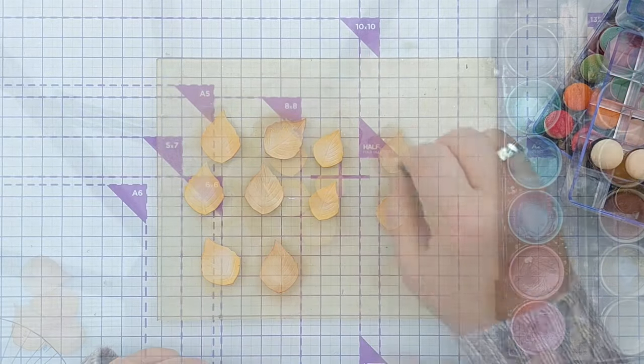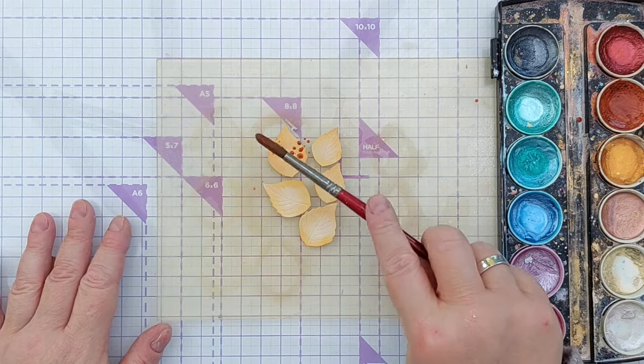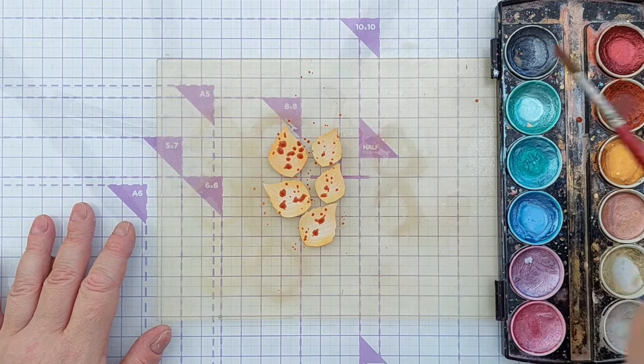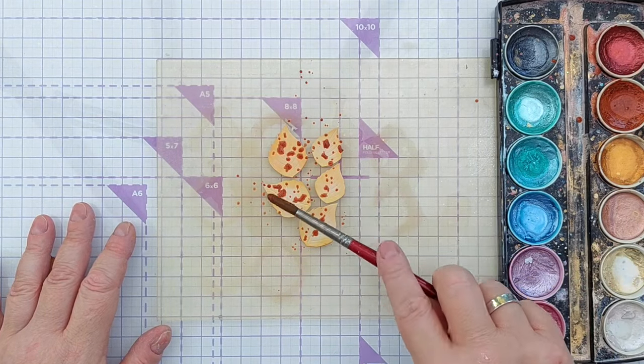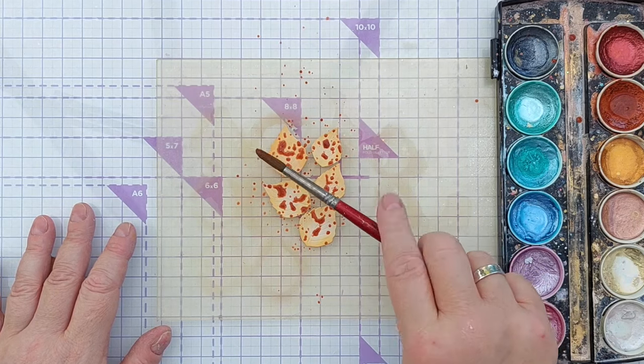To bring in some shimmer and shine, because you know how much I love my shimmer and shine, I spattered on some copper metallic paint. I spattered that onto the leaves that I'd added the spiced marmalade ink to, and then I splattered on a redder copper.